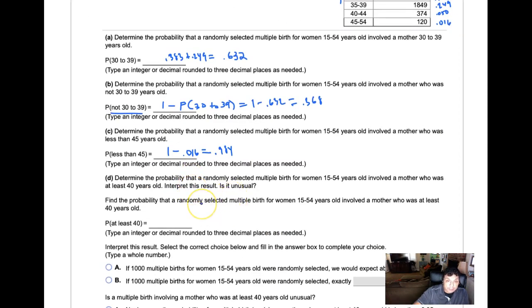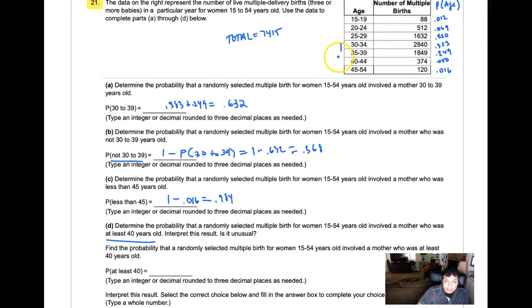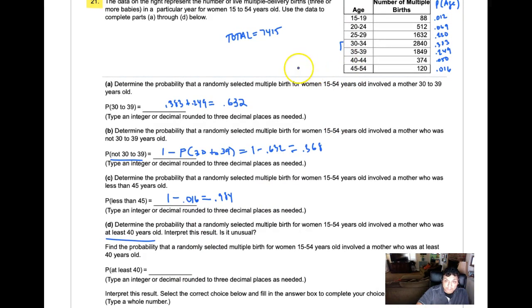Determine the probability that a randomly selected woman was involved with a multiple birth and was at least 40 years old. Is it unusual? At least 40 means 40 or above, so you're looking at 0.050 plus 0.016, which equals 0.066, over a 6% chance.